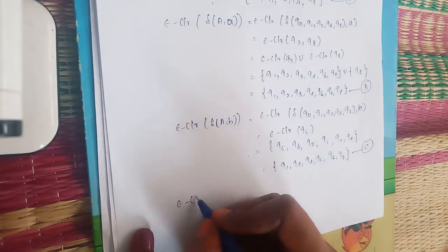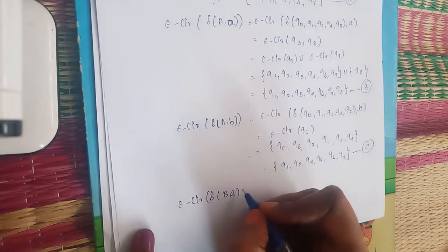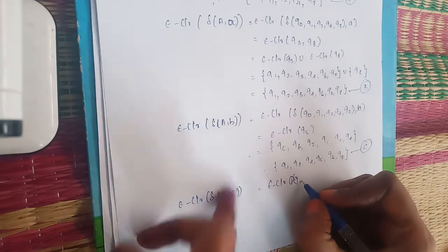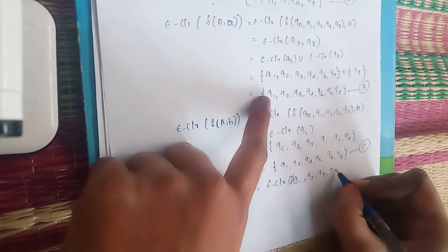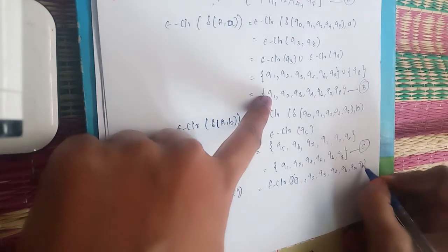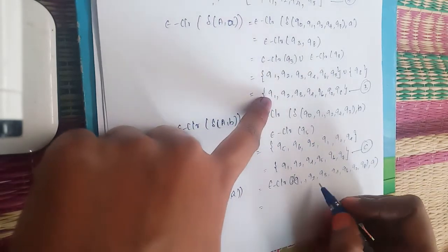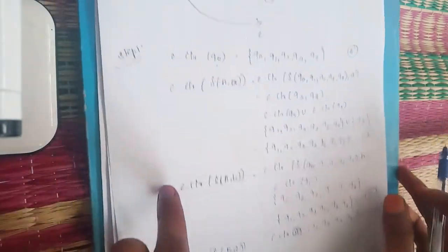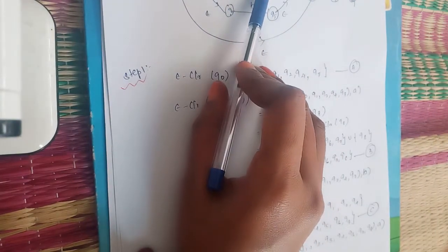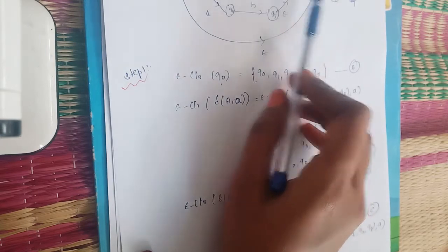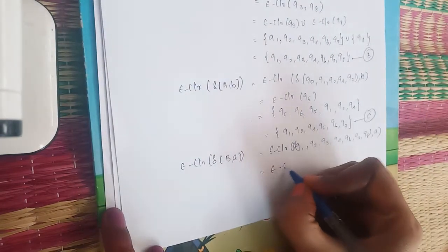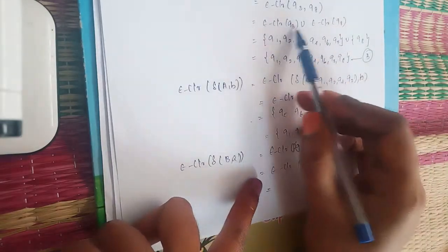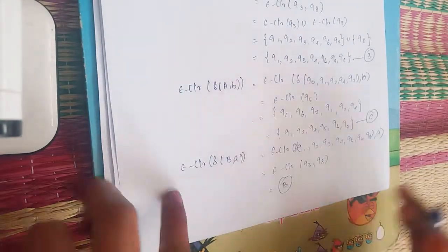Now for state B = {Q1, Q2, Q3, Q4, Q6, Q7, Q8}. We compute E-closure of δ(B, a). On input a, Q2 goes to Q3 and Q7 goes to Q8. So we get E-closure of {Q3, Q8}, which is already found — that is state B. So δ(B, a) = B.